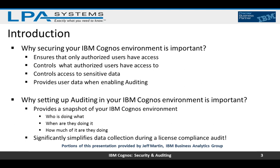Why is securing your IBM Cognos environment important? It basically ensures that only authorized users have access, it controls what those authorized users have access to, it controls access to sensitive data, and it provides user data when enabling auditing. Setting up auditing provides a snapshot of the environment — showing who is doing what, when, and how much.